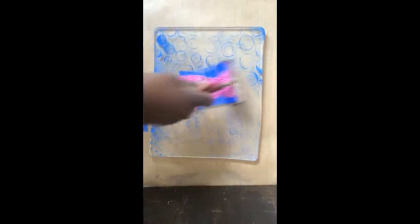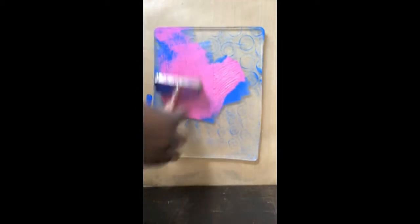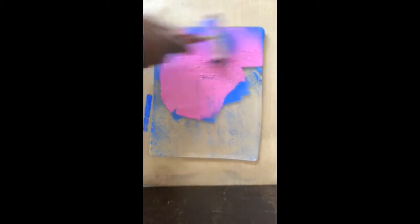Now I'm adding my next color right onto the jelly plate. I'm going to use my brayer to spread out the paint, and then we'll make a design directly into the paint.